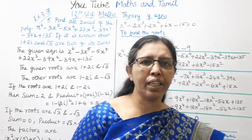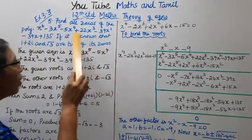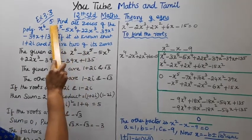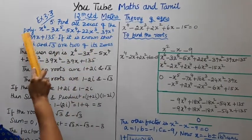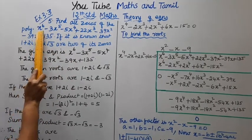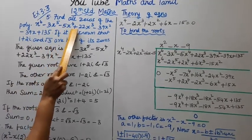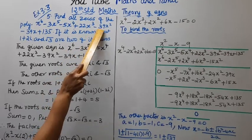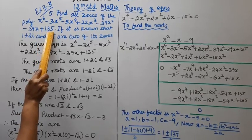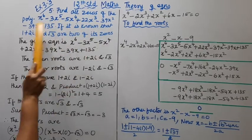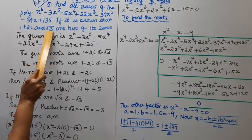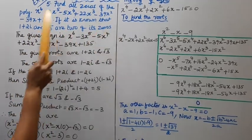Hello students, welcome to Max and Tamil channel. 12th standard, Max Theory of Equations, Exercise 3.3: Find all zeros of the polynomial x⁶ - 3x⁵ - 5x⁴ + 22x³ - 39x² - 39x + 135, given that 1+2i and √3 are two of its zeros.